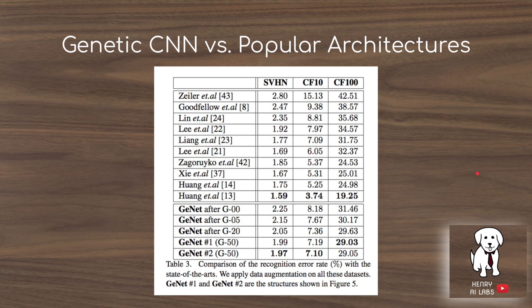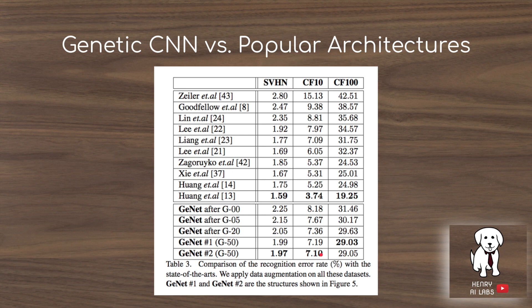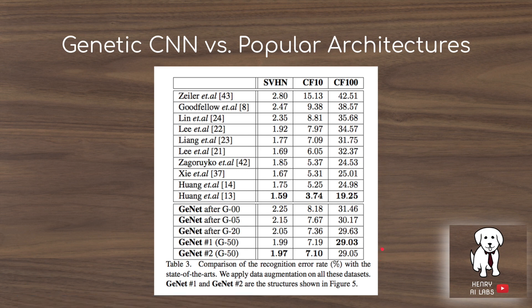The comparison table shows how Genetic CNN networks found after 50 trials compare with popular convolutional network architectures, with DenseNet being the most successful reference. The genetically discovered CNN doesn't quite achieve state-of-the-art results but rivals many previously found architectures. Notably, the paper doesn't show network complexity as a column, but the genetic networks with their defined S and K parameters likely have much less complexity than DenseNet, and evaluation could be sped up using techniques like hyperband or parameter sharing.